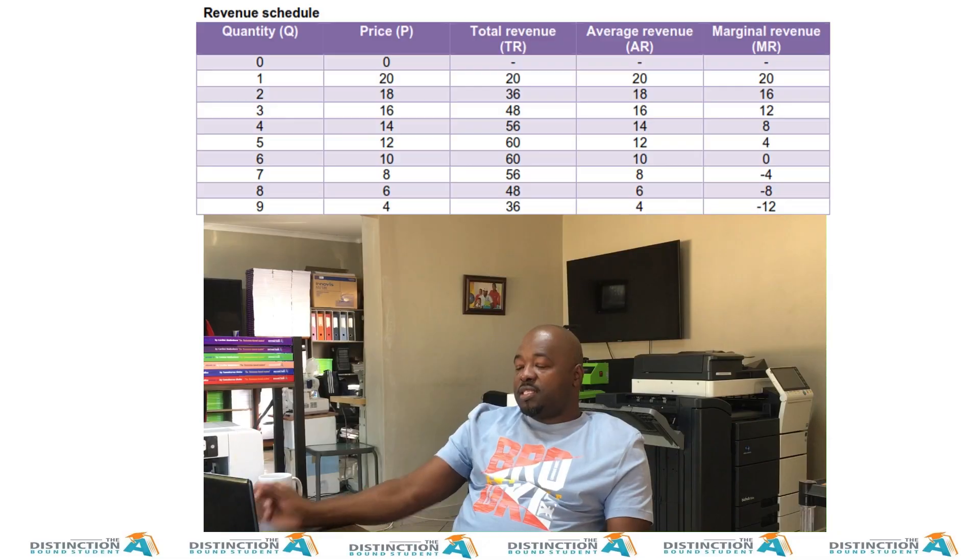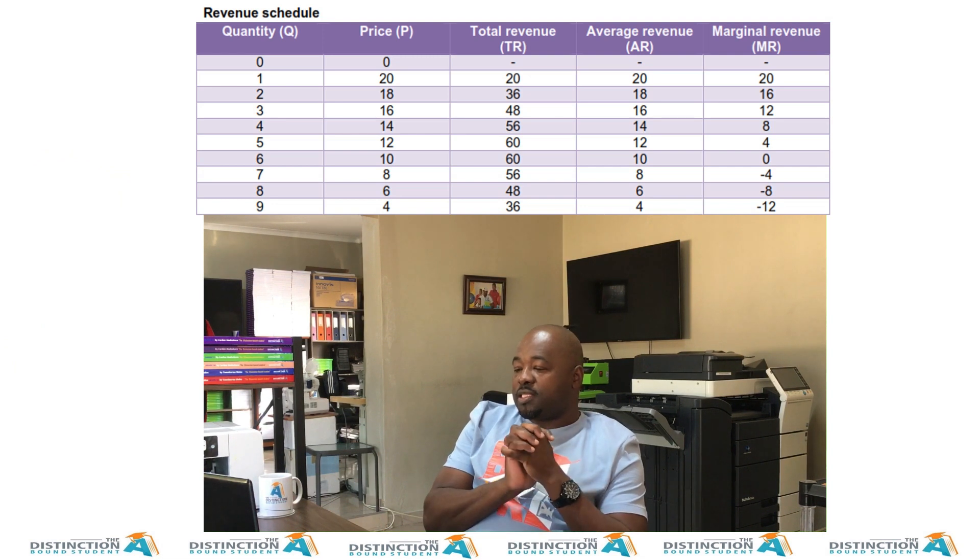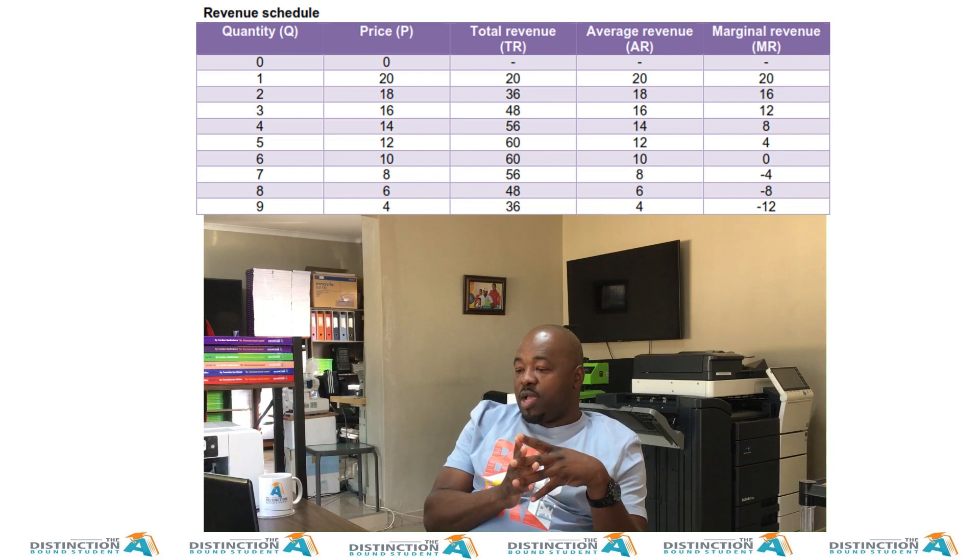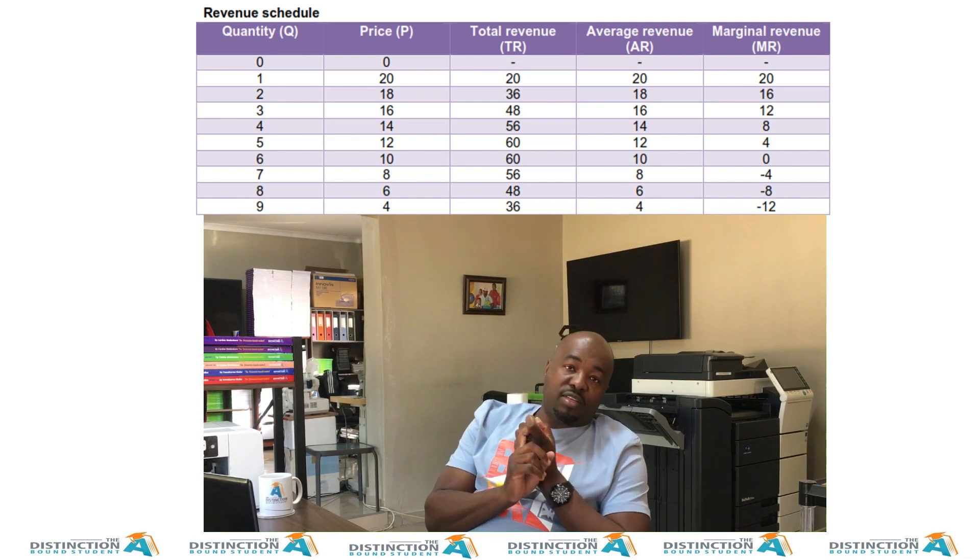So today, in today's lesson, what we're looking at is a monopoly. We want to look at profit and loss for a monopoly. We want to see what happens for us to say a monopoly is making a profit, a monopoly is making an economic loss, or whatever the case is. So to get started, we see here we have a revenue schedule. We have numbers from quantity one to nine, and we have price, we have total revenue, we have average revenue, we have marginal revenue.